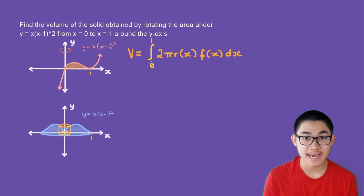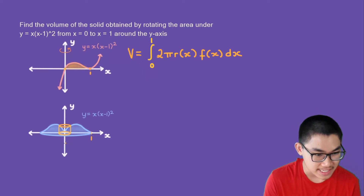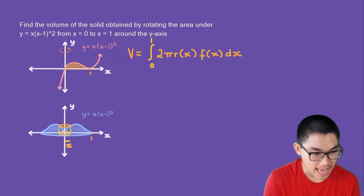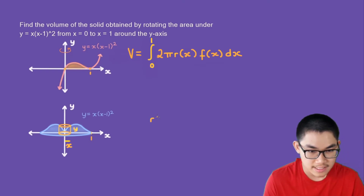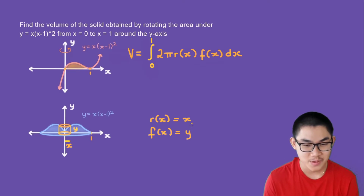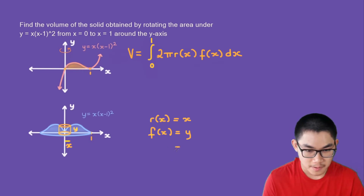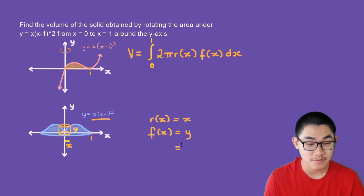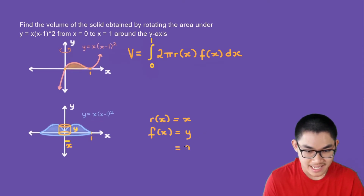The second step is to find the radius and the height. The radius is basically the distance between here and here, and we can say that this distance is x. The height is the distance from here to here, and we can say that this distance is y. So the radius r(x) is the same as x, and the height f(x) is equal to y. Since we're integrating with respect to x, we need to rewrite this function in terms of x. We know that y is equal to x times (x minus 1) to the power of 2.